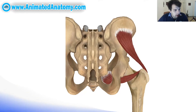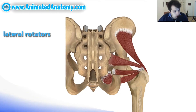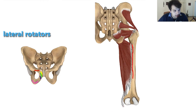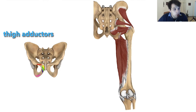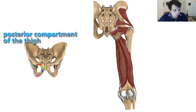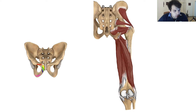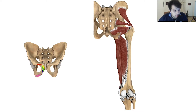In our previous lesson we explained the lateral rotator group of muscles and then we explained the abductors of the thigh. And now we finally come to the posterior compartment of the thigh. We're going to explain the muscles of the gluteal region, but before that we want to go muscle by muscle and explain the posterior compartment and then the innervation and the blood supply as well.